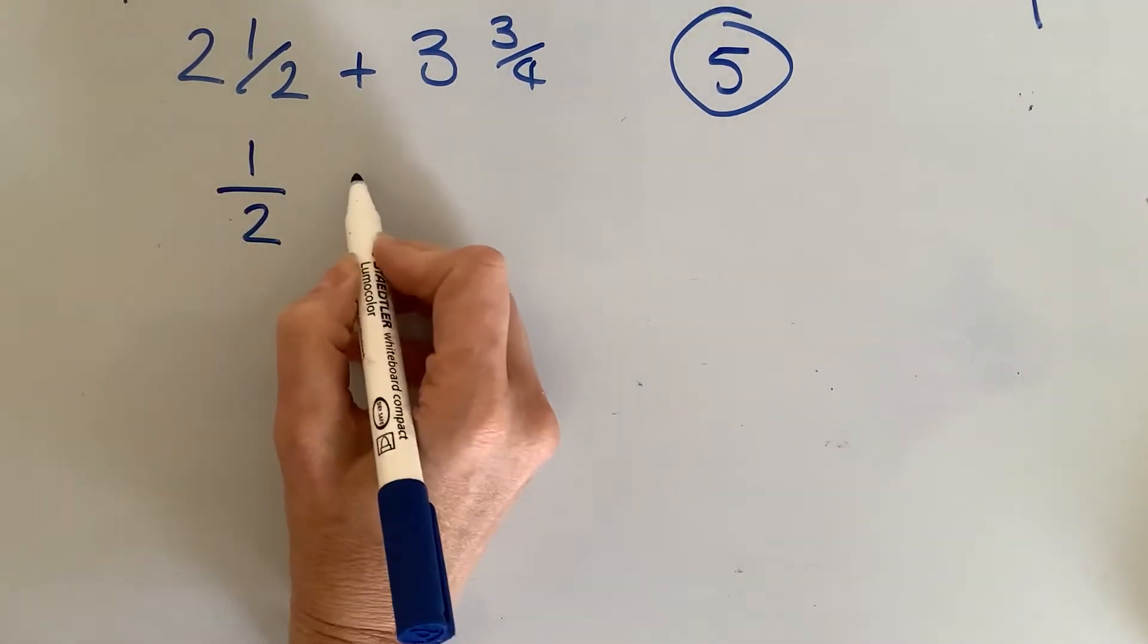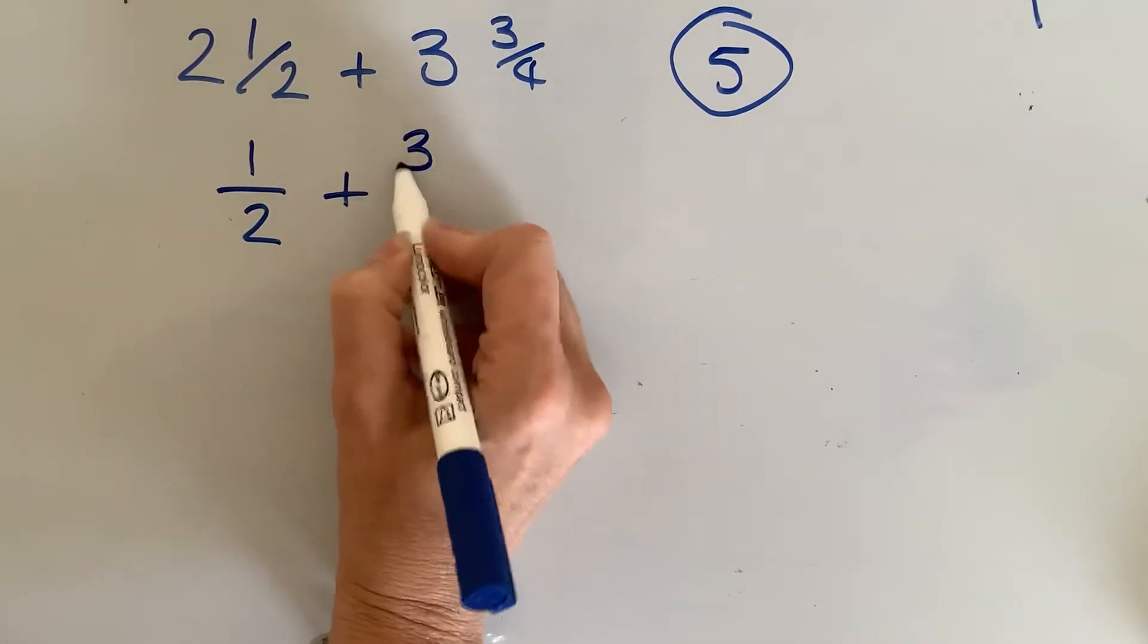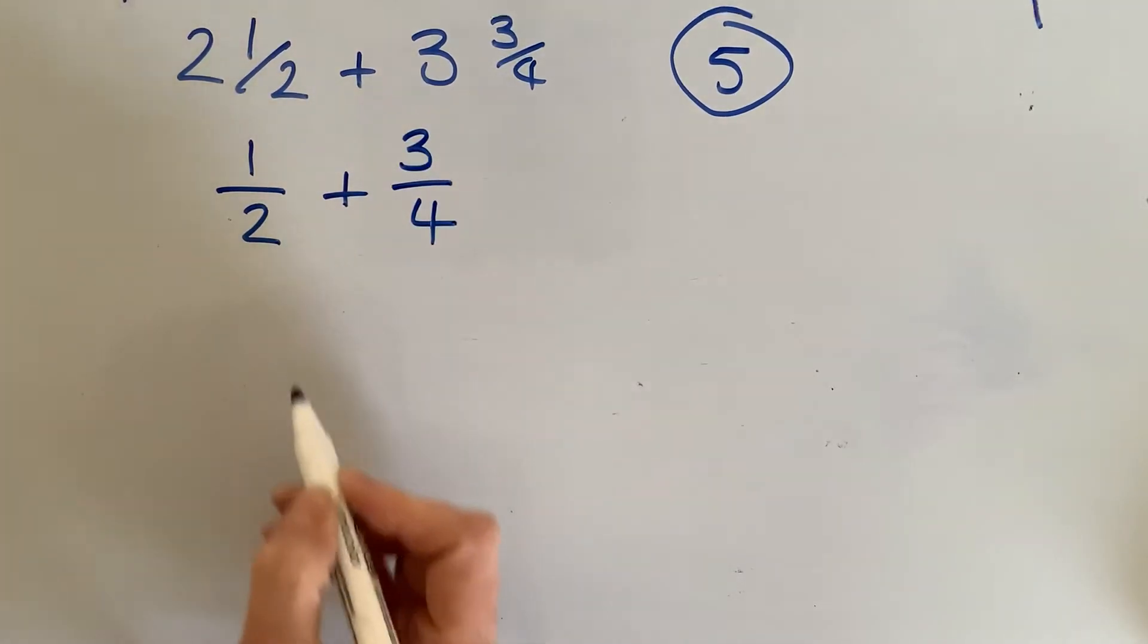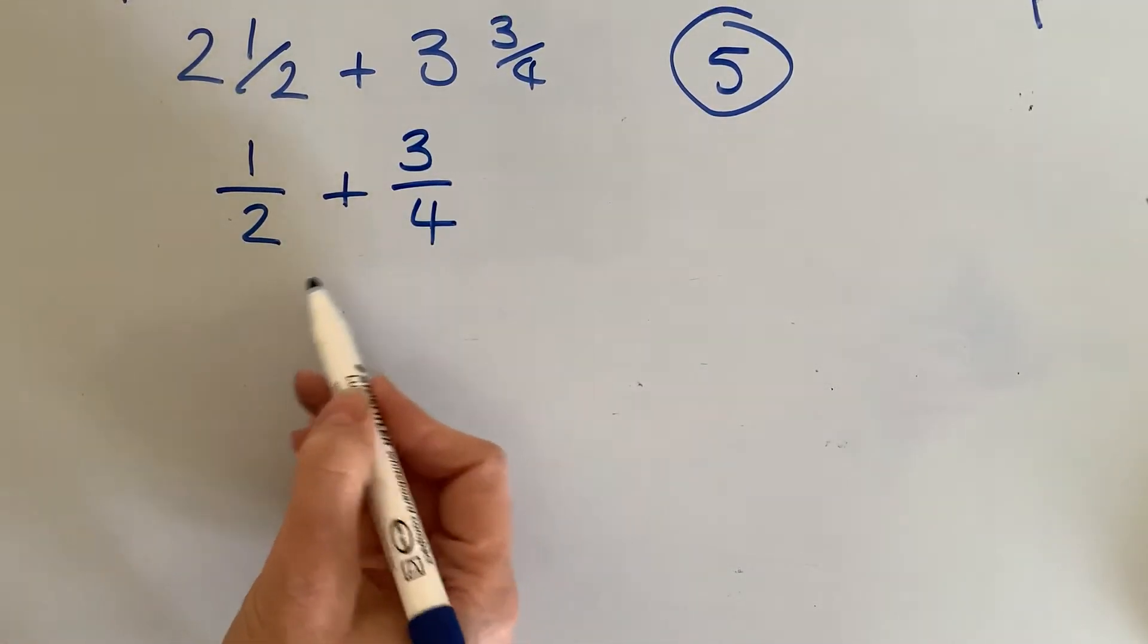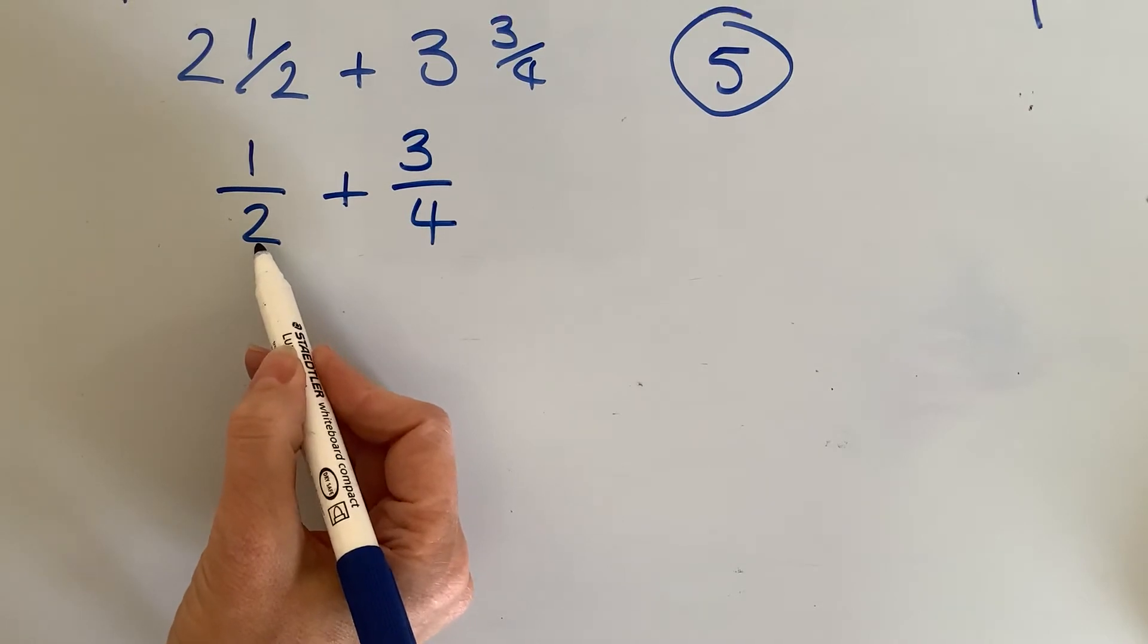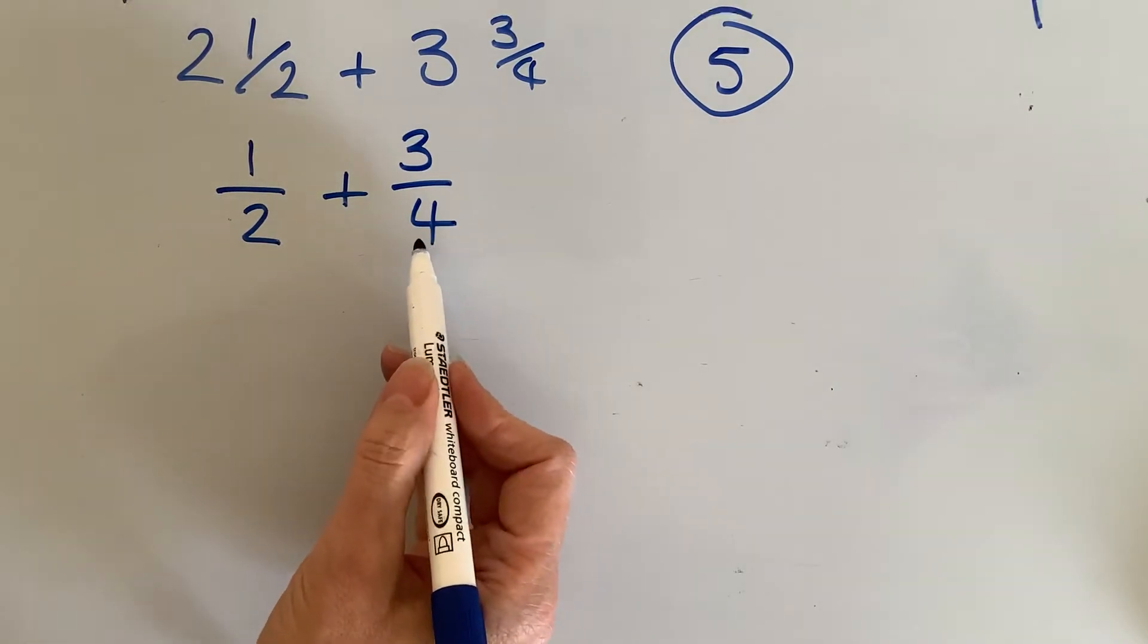So I'm left with a half, added to 3 quarters. I need to make the bottom number, the denominator, the same, so I need to think what number does 2 and 4 go into.